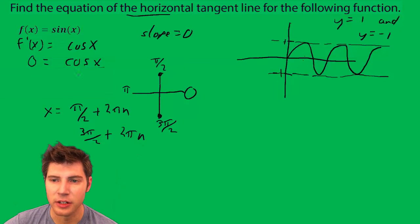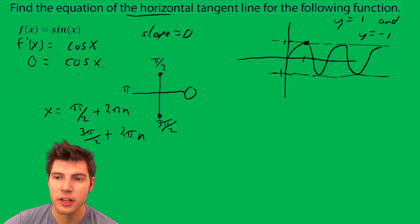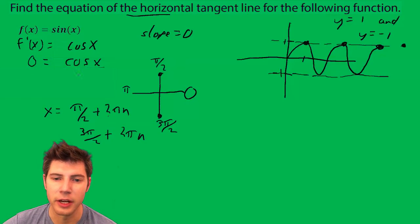So what that means: π/2 is right here. So what it's saying is this point is a point of tangency, this point is a point of tangency, this point is a point of tangency, and there's an infinite number of them. That's why we have the 2πn here.